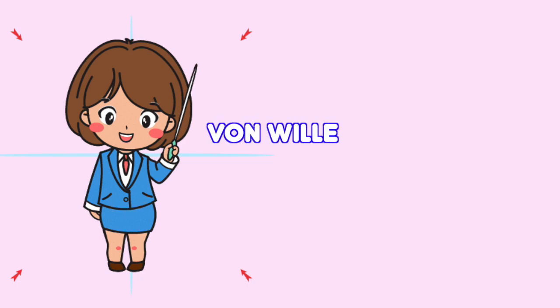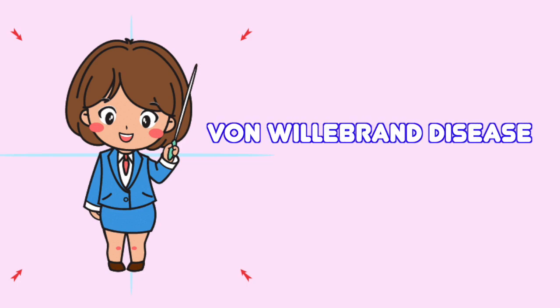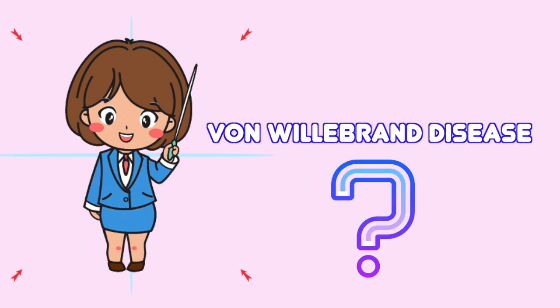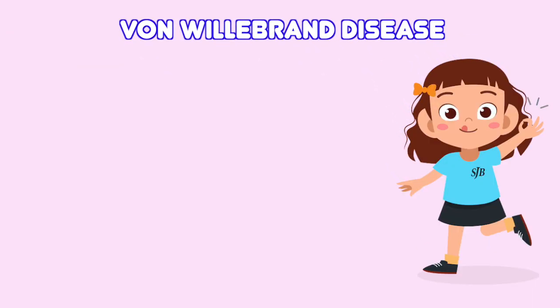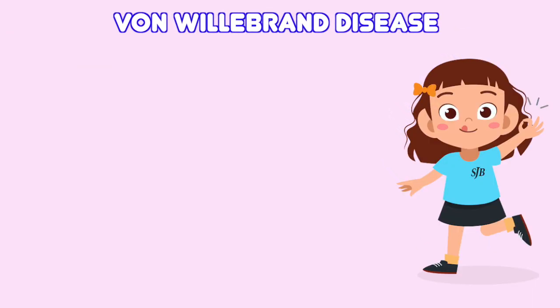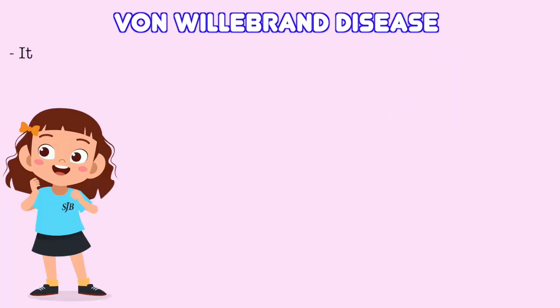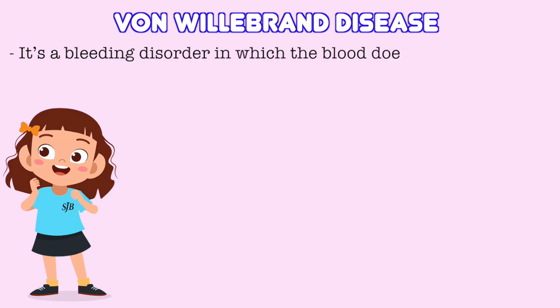In today's class, I'm going to explain von Willebrand disease. Does anyone know what it is? Von Willebrand's disease is a very common hereditary disease. It's a bleeding disorder in which the blood doesn't clot properly.